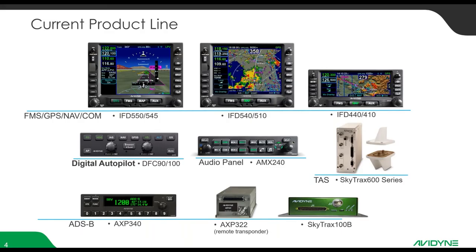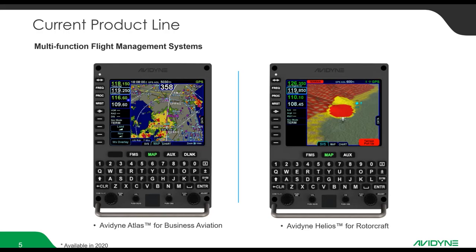Our current product line includes the FMS GPS NAVCOMs — the IFD 550, 540, and 440 — plus GPS-only versions: the IFD 545, 510, and 410. We also have digital autopilots, the DFC-90 and DFC-100, audio panels, ADS-B transponders both panel mount and remote mount. The Skytrax 100B is an ADS-B receiver for 978 megahertz, and then the Skytrax 600. We also have two brand new multifunction flight management systems: the Avidyne Atlas for business aviation and the Avidyne Helios for rotorcraft.